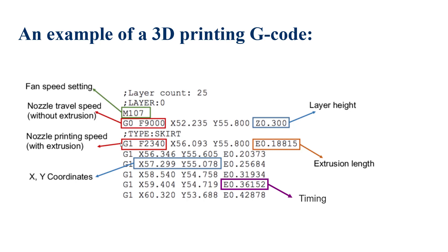You can see here F and 9000. F shows the nozzle travel speed. For example, G0 F9000 shows that when the nozzle moves and there isn't any printing, the speed is 9000 millimeters per minute.